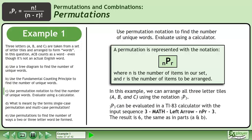3P3 can be evaluated in a TI-83 calculator with the input sequence: 3, math, left arrow, NPR, 3. The result is 6, the same as in parts A and B.